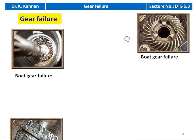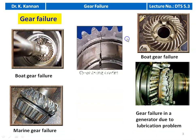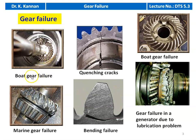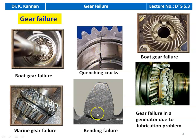Look at some of the images collected on gear failure. This is the failure of a boat gear — the transmission at the end of the differential shows removal of material; the tooth profile is missing due to erosion, corrosion, and overloading. This is a conching crack from improper conching — there is a crack on the gear blank. Here it is bending due to overloading. You may also find a pitting effect on the surface, and here is gear failure in a generator due to a lubrication problem, resulting in removal of material and damage of the complete tooth.